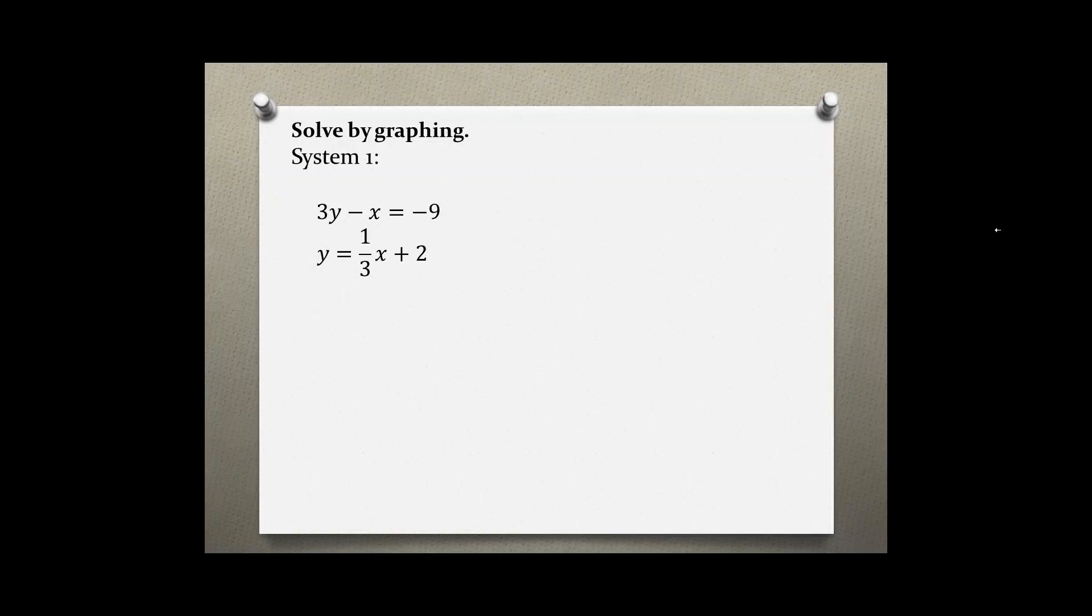For me to be able to graph these two lines on the coordinate system or by using a graphing calculator, I need to solve both systems for y equals, which means we are putting them into slope-intercept form, y equals mx plus b.